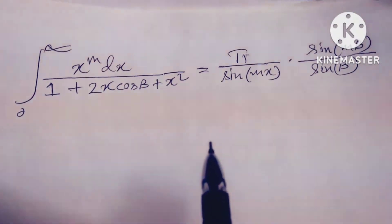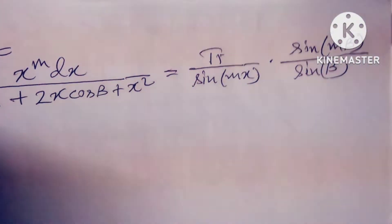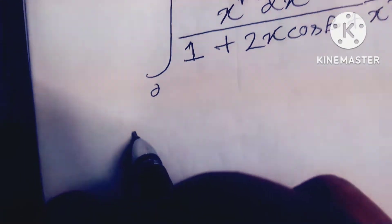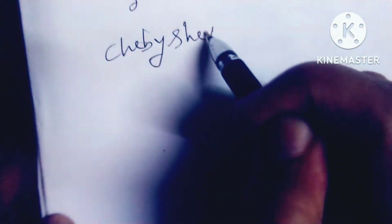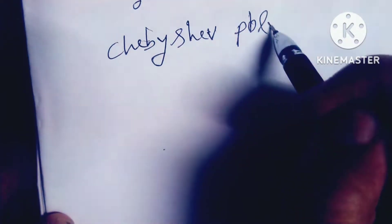I will solve this with the help of Ramanujan's Master Theorem. Friends, you need to know the Chebyshev polynomial — we have already learned Chebyshev's inequality in statistics, and now we learn the Chebyshev polynomial of the second kind.